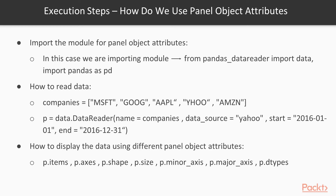Execution step: how do we use panel object attributes? We first import the modules — from pandas_datareader import data, and import pandas as PD. To read the data, we declare companies — in this example, Microsoft, Google, Apple, Yahoo, and Amazon. We then declare the panel object p and assign it the value data.DataReader with parameters: name equals companies, data_source equals Yahoo, and start date and end date. To display data using different panel object attributes, we use p.items, p.shape, p.axes, p.size, p.minor_axis, p.major_axis, and p.dtypes. We'll go to the Python code editor to show the code step by step.